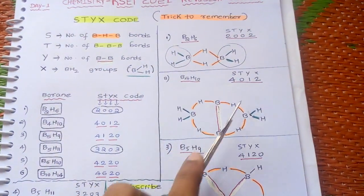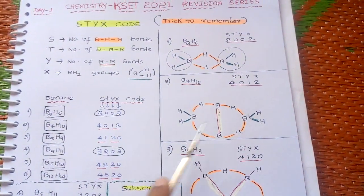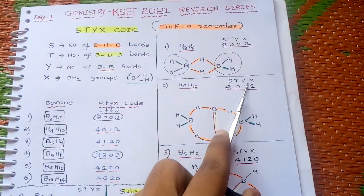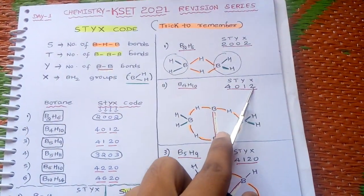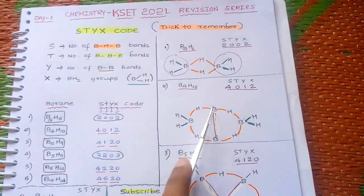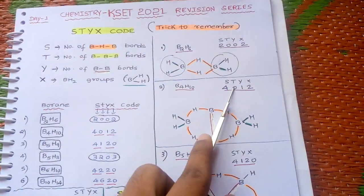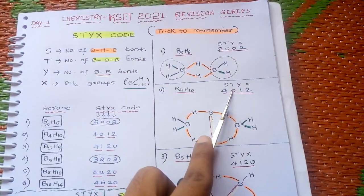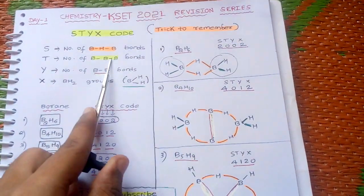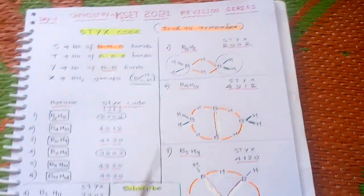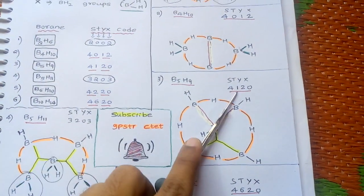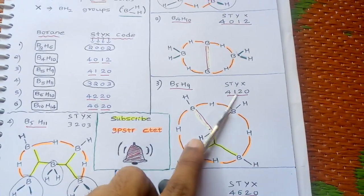For B4H10, the STYX code is 4012. S means BHB bonds — there are four BHB bonds. X is two terminal BH2 groups. Y, the BB bond, is one. T is zero — there are no BBB bonds.